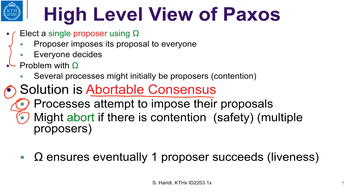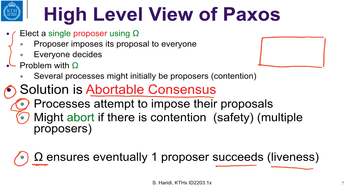Eventually, using omega, there will be one proposer. So eventually one proposer will succeed and is alone — that is liveness. The abstraction that the core Paxos algorithm implements is called abortable consensus, where processes can propose values and can either decide or abort.